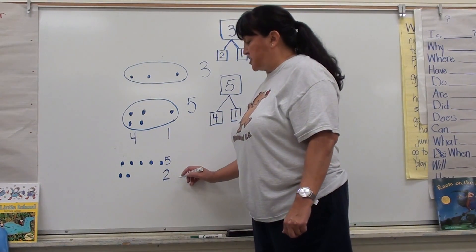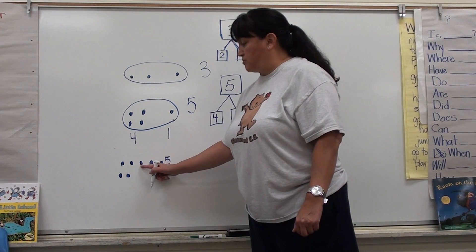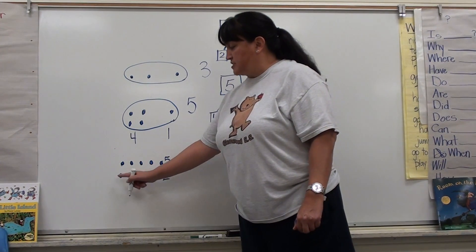If I put these two numbers together, I will get one, two, three, four, five, six, seven.